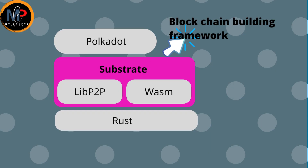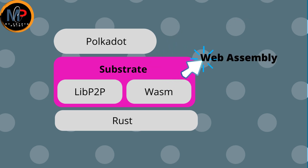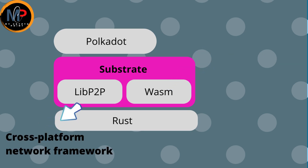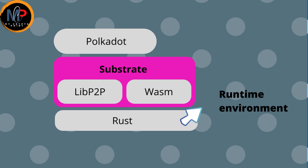Polkadot consists of Substrate, a blockchain building framework; Wasm, a Web Assembly interpreter written in Rust; LibP2P, a cross-platform network framework; and Rust, the runtime environment for Polkadot.